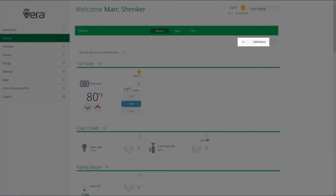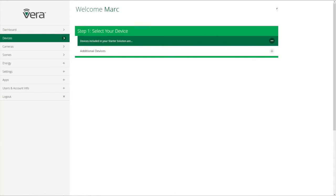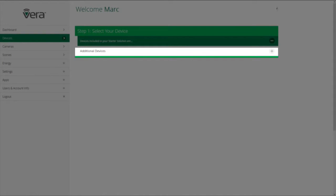Now let me walk you through the process of how we go through adding a device to the network through the web interface. You start by clicking on Add Device. If you've purchased a Vera kit, the devices included in your kit would be populated here. Otherwise, click on Additional Devices here.